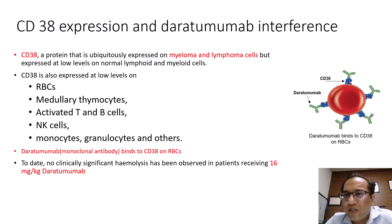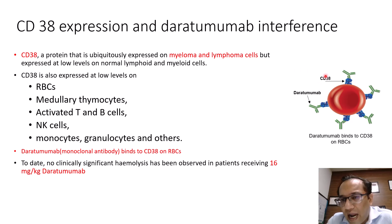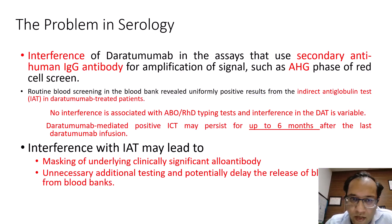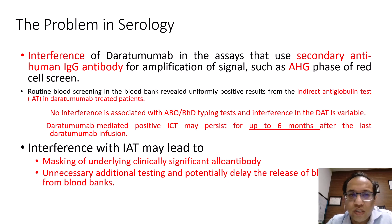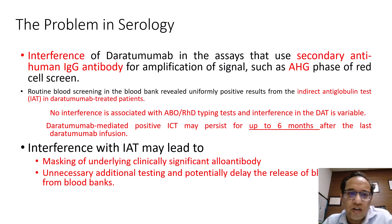CD38 is expressed on medullary thymocytes, activated T and B cells, NK cells, monocytes, granulocytes, and others. Daratumumab binds the CD38 present on RBCs, and when we add anti-human globulin as a secondary antibody, this gives a positive — or false positive — result. The interference occurs in assays that use secondary anti-human IgG antibody for signal amplification, such as the IAT phase of the red cell screen. Routine blood bank screening reveals uniformly positive indirect antiglobulin test results in daratumumab-treated patients. There is no interference with ABO and Rh grouping, although the DAT result is variable.